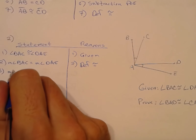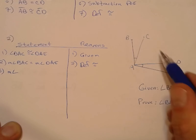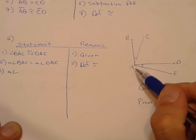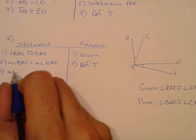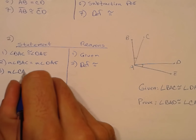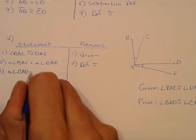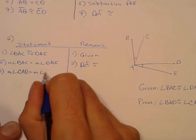The angle between both those two little angles — the measure of angle CAD — is congruent to itself. And that is the reflexive property.